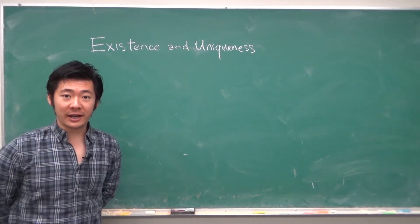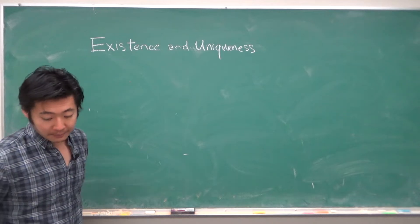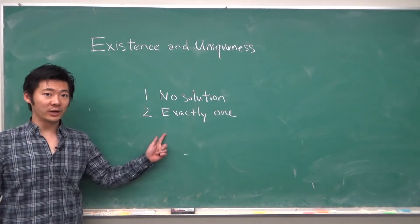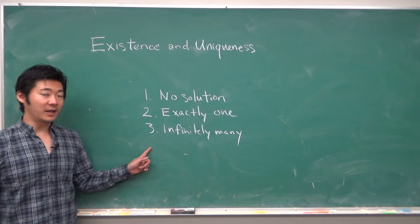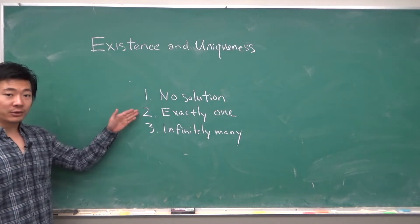So a system of linear equations has three possibilities. One, it could have no solution. Two, exactly one. Or three, infinitely many. And these are the only three possibilities.